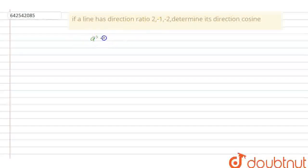A is 2, B is minus 1, and C is minus 2. So their direction cosines will be A upon under root A square plus B square plus C square,